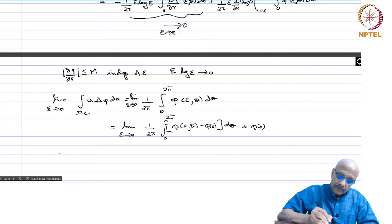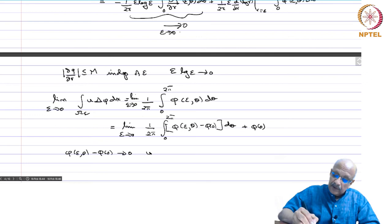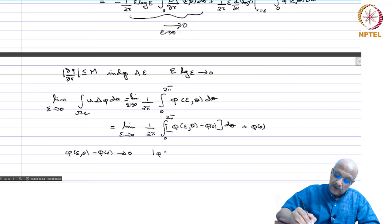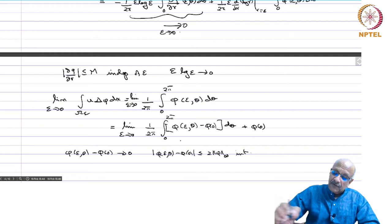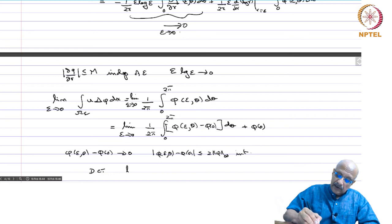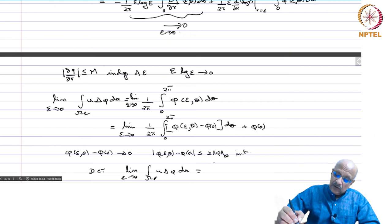We need to show the remaining limit is 0. Now φ(ε,θ) − φ(0) → 0 as ε→0, in fact it goes to 0 uniformly. Also |φ(ε,θ) − φ(0)| ≤ 2‖φ‖_∞, which is integrable on the finite interval. By the dominated convergence theorem, the limit of that integral is 0, and we just get φ(0).